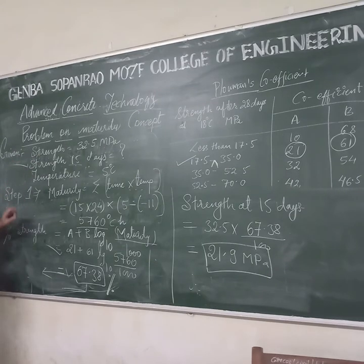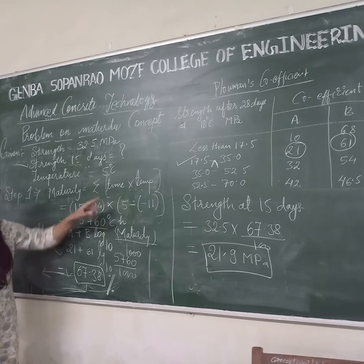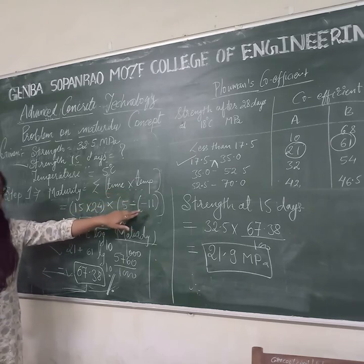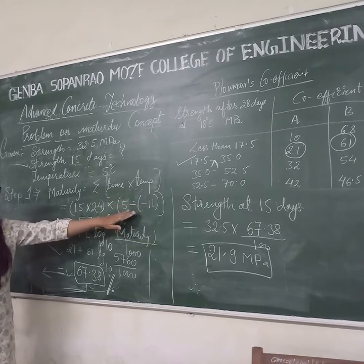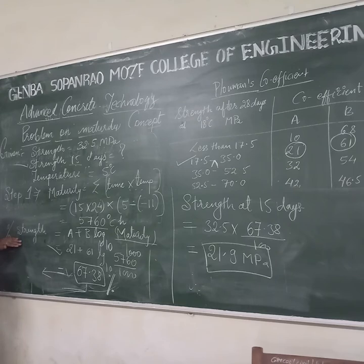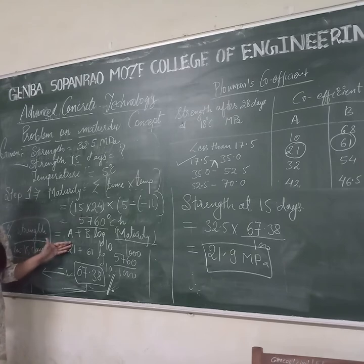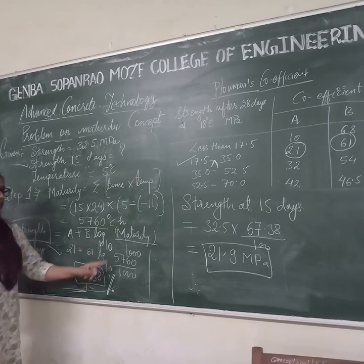Keep in mind what you have to calculate for this type of question. Step 1 is to calculate maturity — maturity equals the multiplication of time and temperature. Time you have to take in hours, so multiply by 24. For temperature you have to consider the datum temperature of minus 11, and 5 is the temperature given in the question. By this you will get the value of maturity in degree centigrade hours.